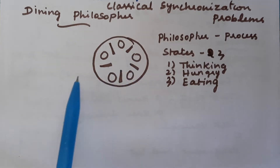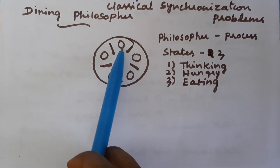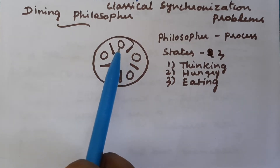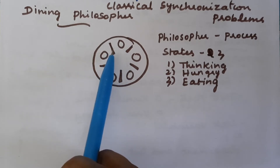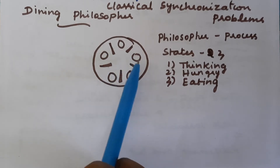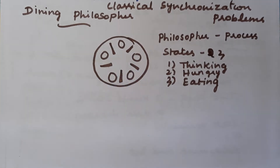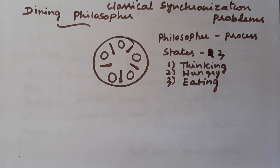We don't give two forks separately for each philosopher. So if more than one philosopher feels hungry at the same time — say the first and second philosopher both want to eat — the first philosopher will take the left and right fork, but the second philosopher will not get the right fork. He can get only the left side, and with only one fork he cannot eat. This relates to the Chinese philosopher analogy, where eating with only one chopstick is not enough.